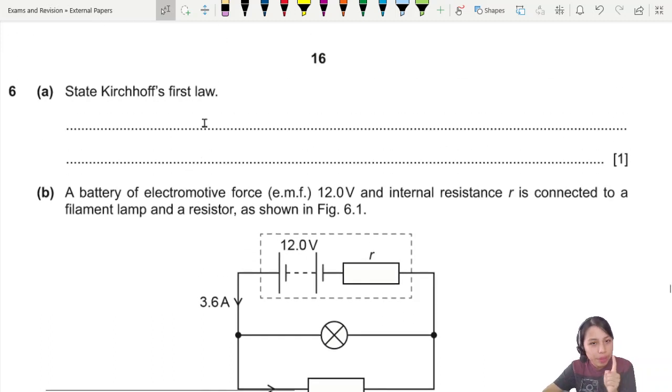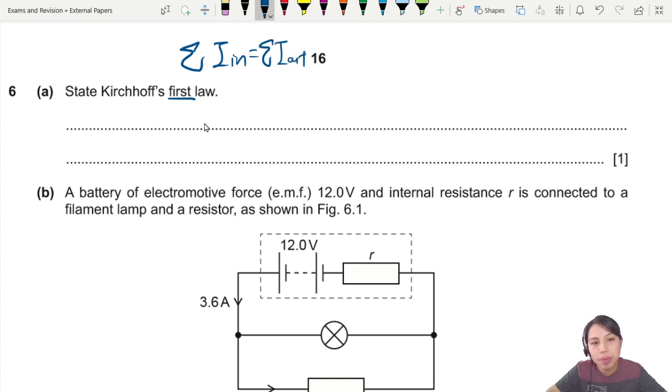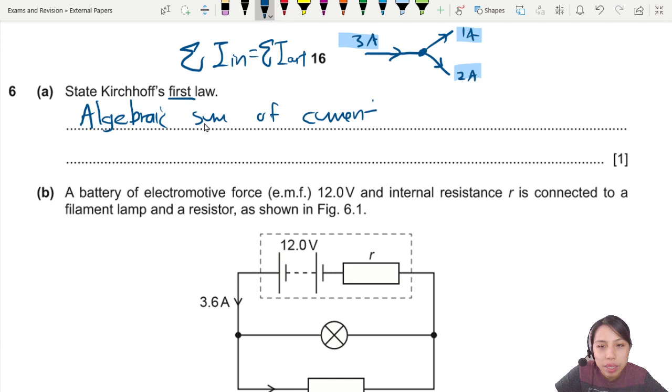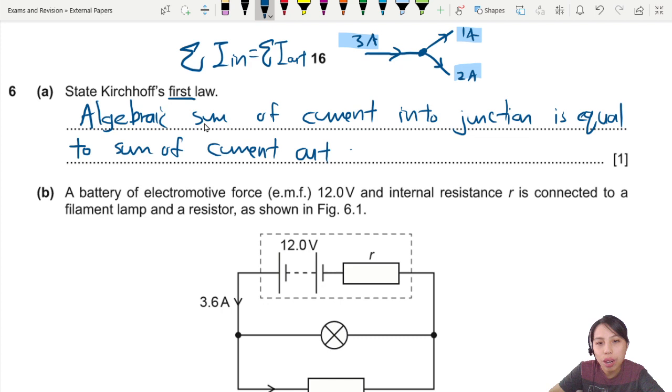State Kirchhoff's first law. There are two laws of Kirchhoff. One is for current, one is for potential difference and energy. First law refers to current. We basically say the sum of current in equals the sum of current out at the junction. This is the algebraic sum of current into a junction is equal to sum of current out of the junction.